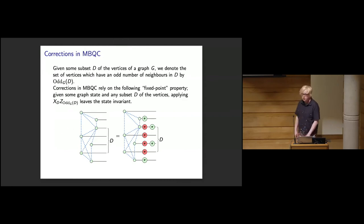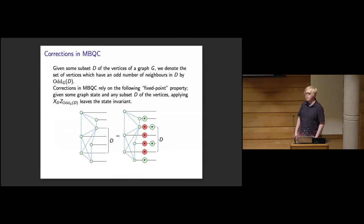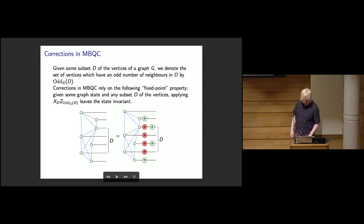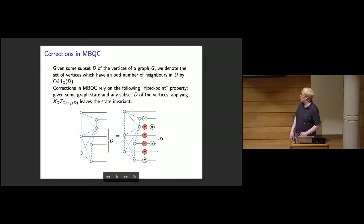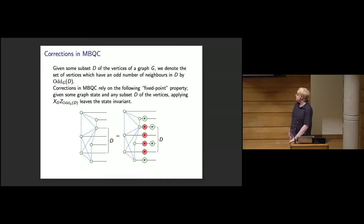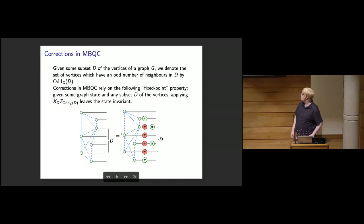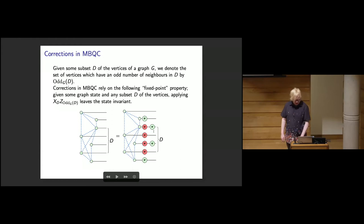Corrections in MBQC rely on the fixed point property. For any subset D of vertices of a graph state, we can apply a Pauli X gate to D and a Pauli Z gate to all odd neighborhoods of D — vertices with an odd number of neighbors in D — and this leaves the state invariant. For example, a qubit not in D with no neighbors in D gets nothing; one with an odd number of neighbors in D gets a green pi phase (Pauli Z); and a qubit in D gets a red pi phase (Pauli X).